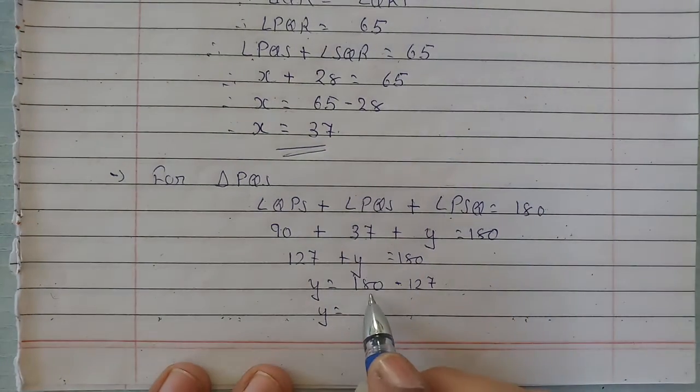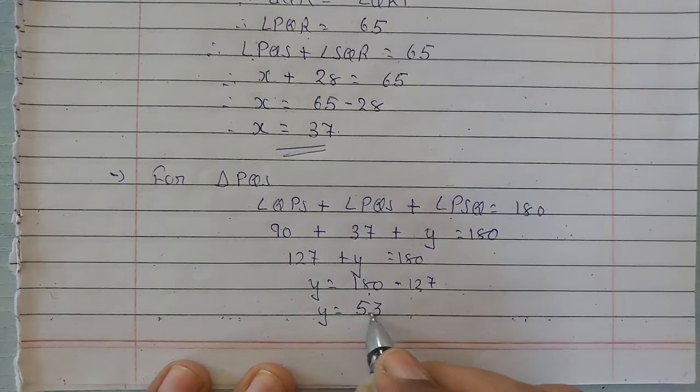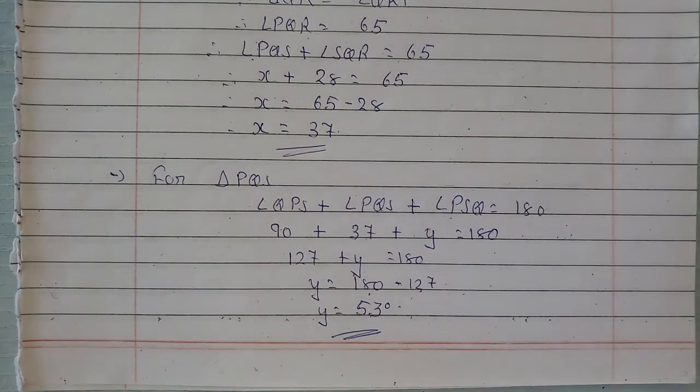From this, y will be equal to 180 minus 127, and that is equal to 53 degrees. Clear? Thank you.